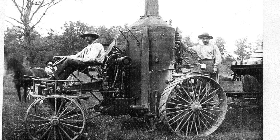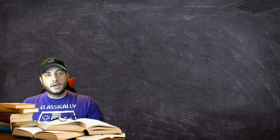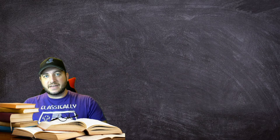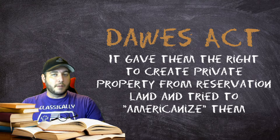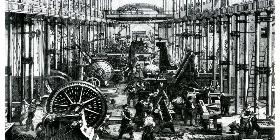In 1887, Congress passed the Dawes Act — a thinly veiled attempt to help the natives by giving them the right to create private property from reservation land and trying to Americanize them. However, the Dawes Act was a failure because it lacked respect for Indian traditions and led to a massive sell-off of Indian lands. In the decades following the Civil War, Americans experienced a Second Industrial Revolution.